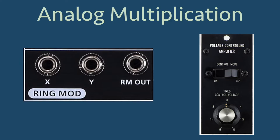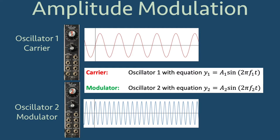To understand ring modulation, let's start with what we had with amplitude modulation, where we had a carrier wave and a modulator wave. The carrier will be oscillator 1 with equation y1 equal a1 sine of 2 pi f1 t, and the modulator will be oscillator 2 with equation y2 equal a2 sine of 2 pi f2 t. In these equations, a1 and a2 are amplitudes, and f1 and f2 are frequencies.